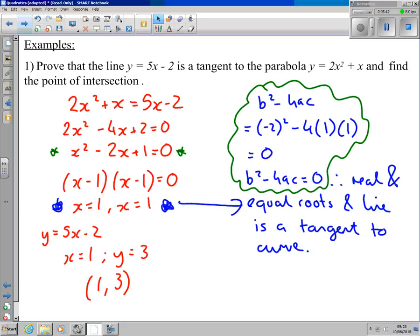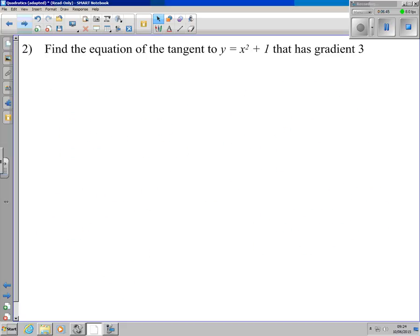That's example one, the kind of bog standard one. I'm going to show you a more niche example. Find the equation of the tangent to y = x² + 1 that has gradient 3. This one's a little bit trickier. What we're going to do is, I want to find the equation of the tangent to this line that has a gradient of 3. If I know it has a gradient of 3, then I know it's got to look something like y = 3x + c, because if I've got a gradient of 3, all I need to know then is the y-intercept and I can get my equation.